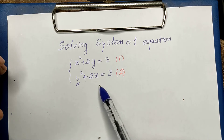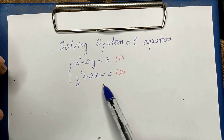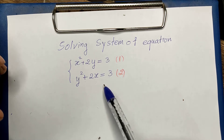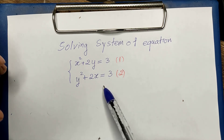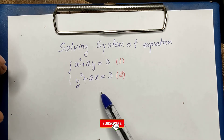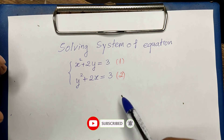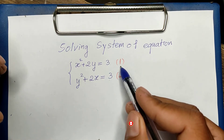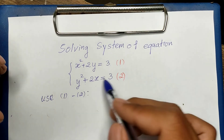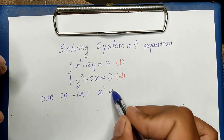If you know how to solve this, please pause the video and try it. If you don't know, keep watching from the beginning to the end. Now let's go to the solution together. I will subtract the second equation from the first and get x squared minus y squared plus 2y minus 2x equals zero.